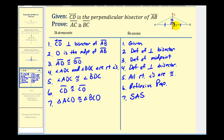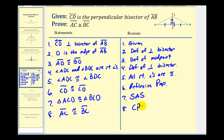Now that we have these two triangles congruent, we know that segment AC must be congruent to segment BC, which is what we were trying to prove. The reason for this is that corresponding parts of congruent triangles are also congruent. So if these two segments are congruent, they would be the same length, therefore proving the perpendicular bisector theorem.